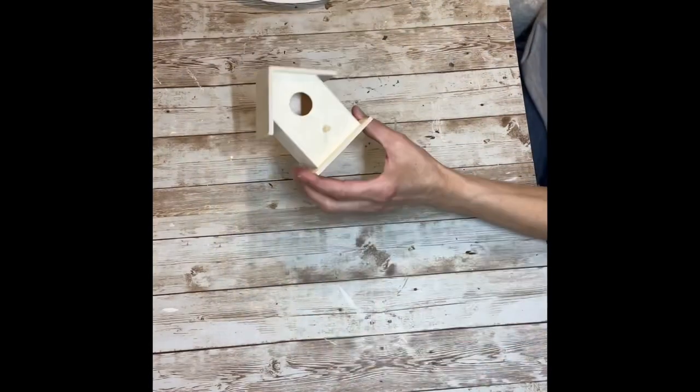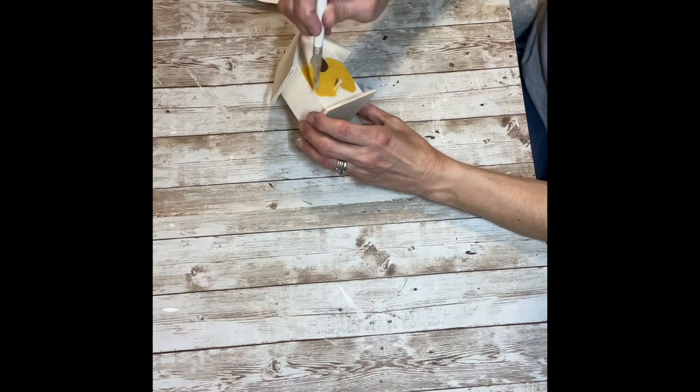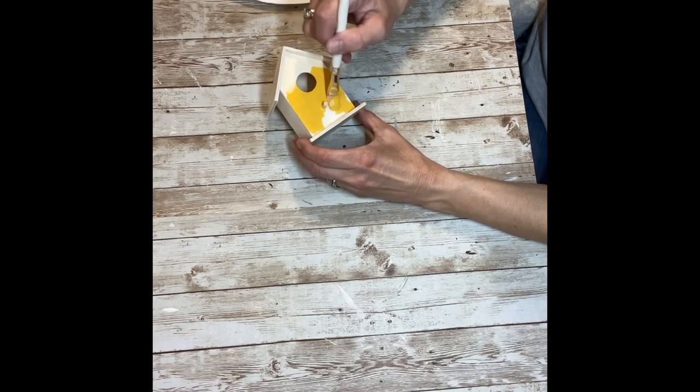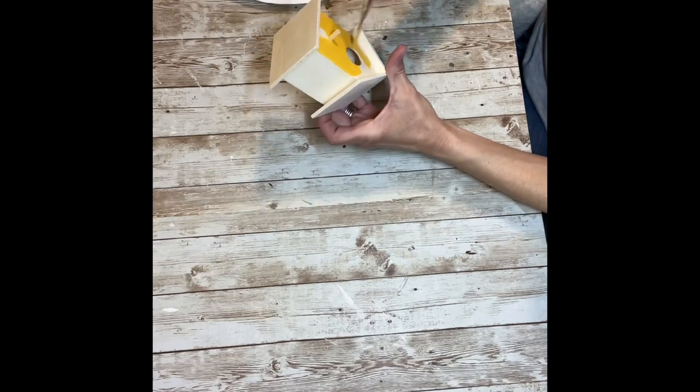The first thing I'm going to do is take that yellow paint and paint just the middle part of the bird house. I'm not going to paint the roof or the base, just the center. All the way around front, the sides, and the back are all going to be that yellow color.